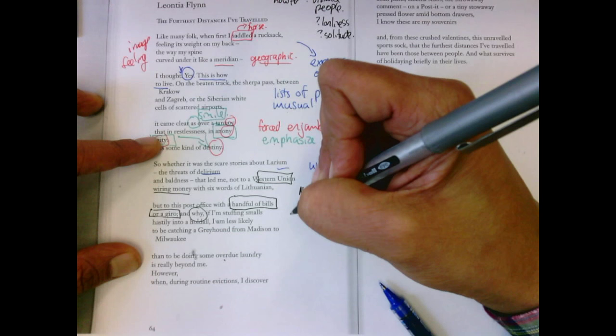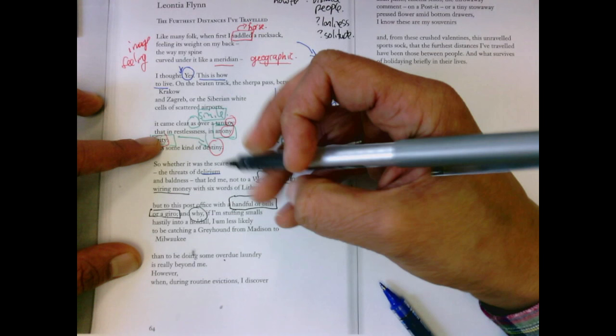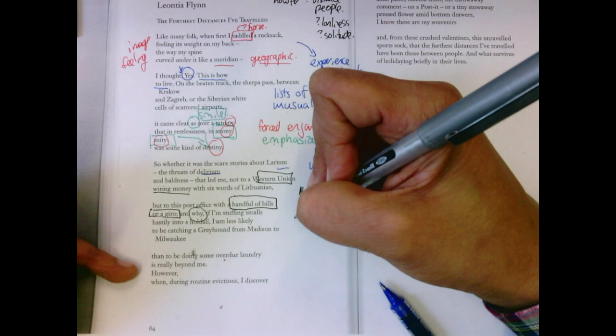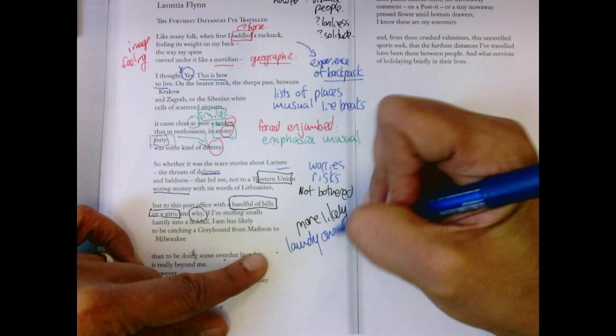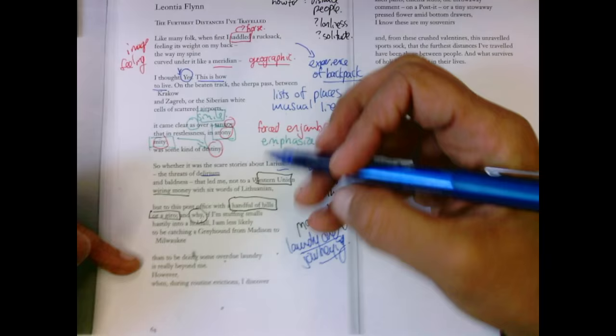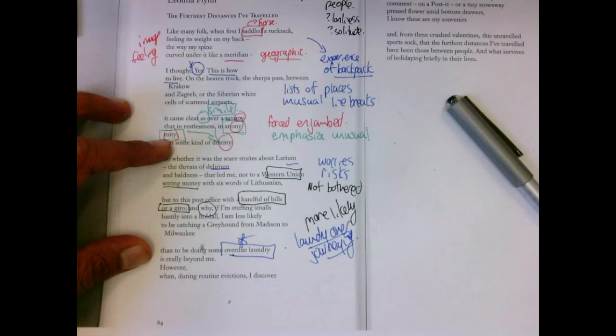she's more likely doing laundry, more likely now laundry over journeying. She's been doing this so long that actually now some of it is just about just doing overdue laundry and just catching up.